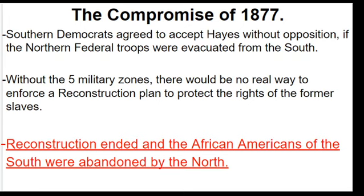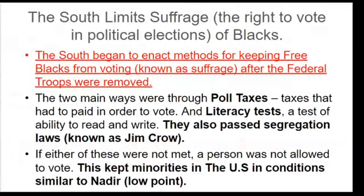Reconstruction ended, and African Americans of the South were abandoned by the North. The South began to enact methods to keep free blacks from voting — the right to suffrage. Once the federal troops were removed, there was nobody to stop them. The two main ways were poll taxes and literacy tests. A poll tax had to be paid in order to vote, but if you don't have money, you can't pay. A literacy test required the ability to read and write — and if 95% of the black population cannot read or write, they can be denied the right to vote. These are Jim Crow laws.